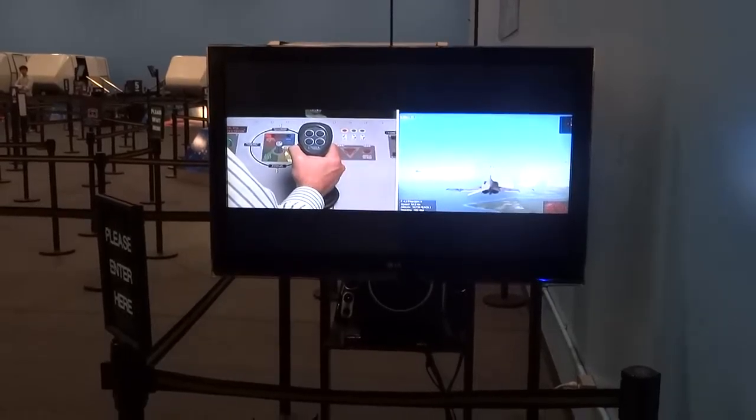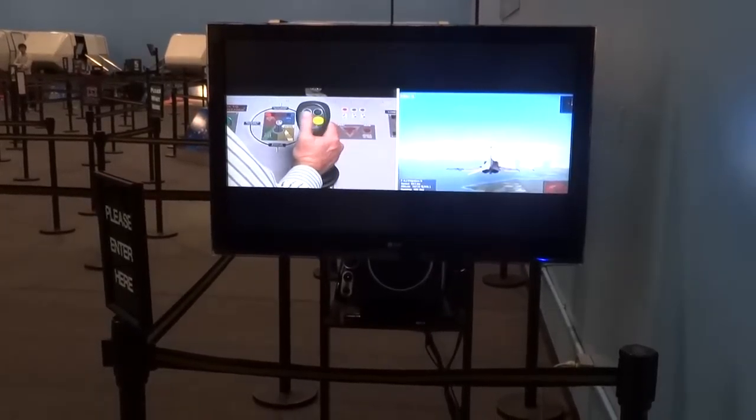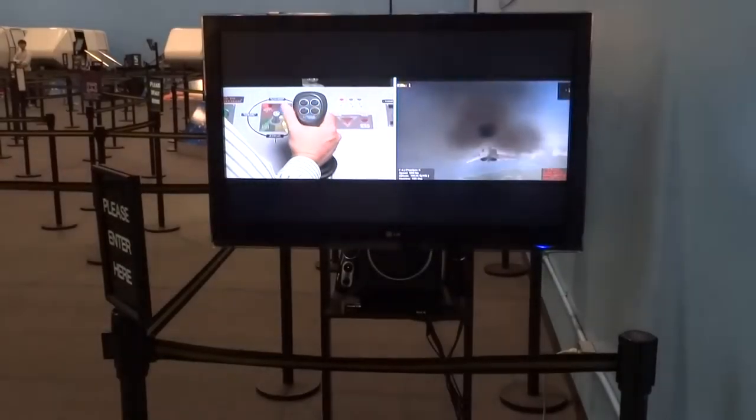For medium range targets that are within a line of sight, heat seeker missiles are activated by pressing the right missile button.